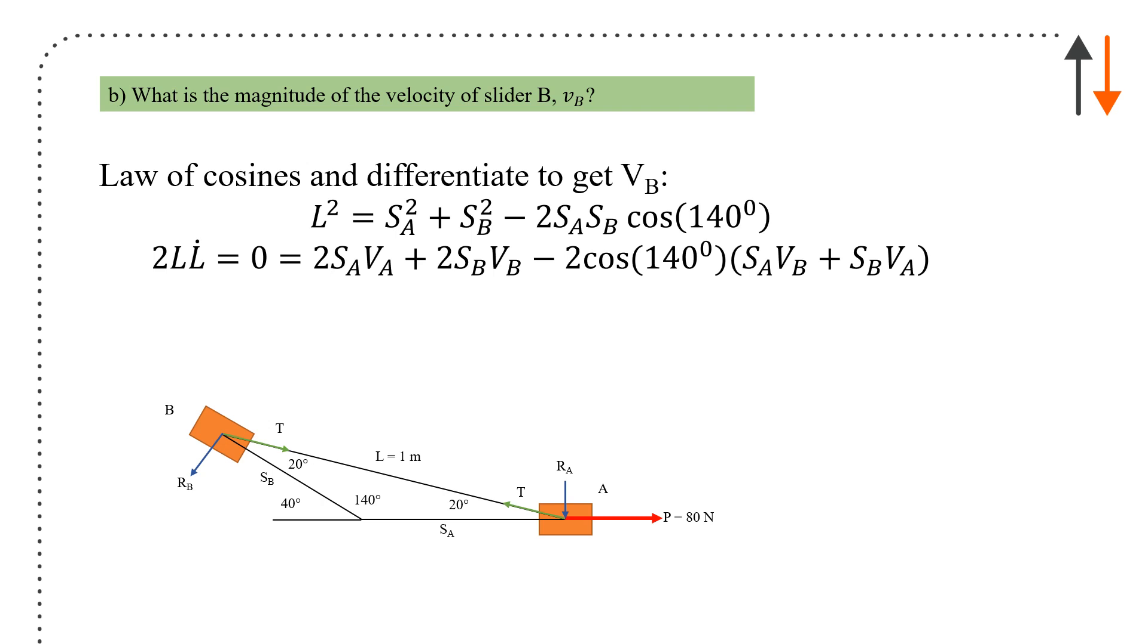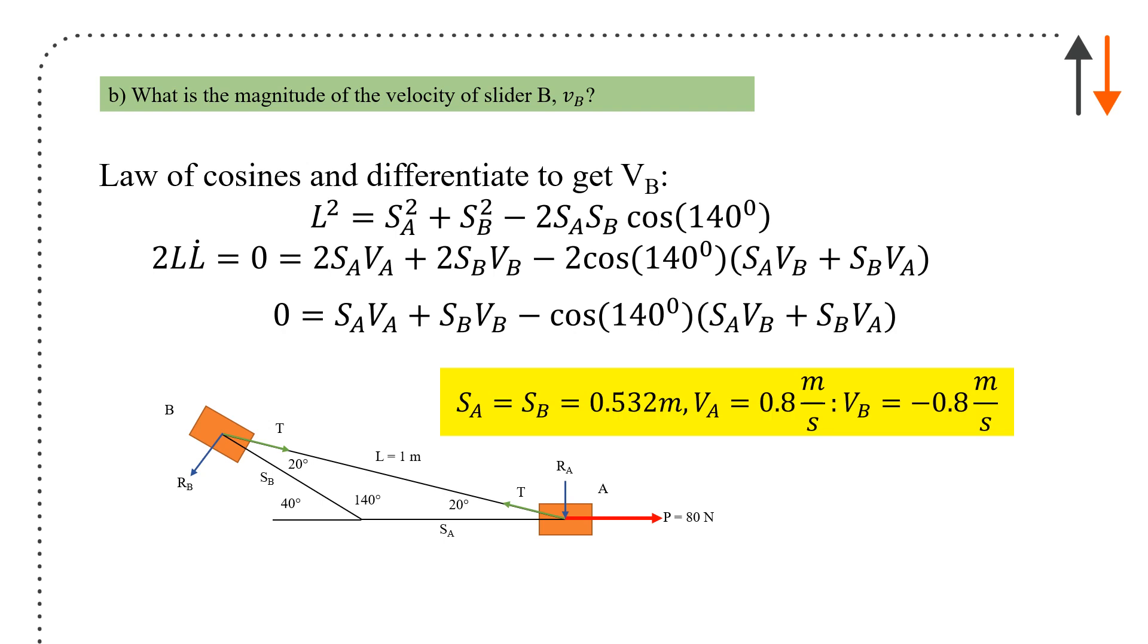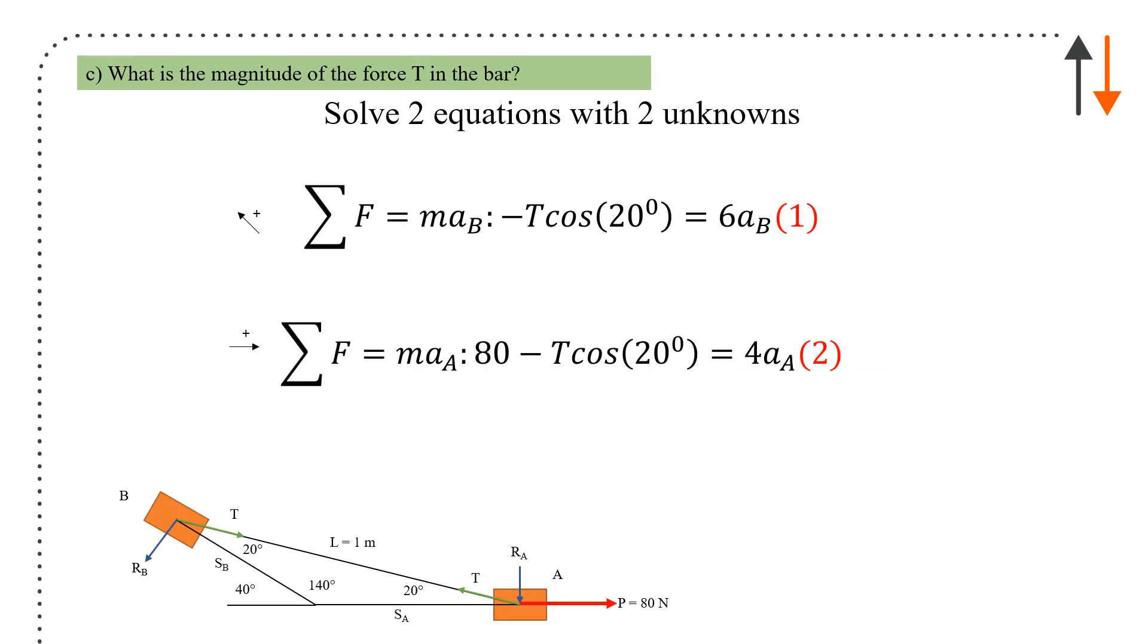What is the magnitude of the velocity of slider B? You're going to use a velocity relationship for absolute dependent motion. L equals s_a squared plus s_b squared minus 2 s_a s_b cos of 140. Substitute everything in and calculate all the terms. You end up with v_a and v_b having the same magnitude but different direction. Solve the two equations with two unknowns to find the force in the bar. Substitute in all the terms: you have acceleration A, acceleration B equals minus 15.3 meters per second squared, and T equals 97.65 newtons.